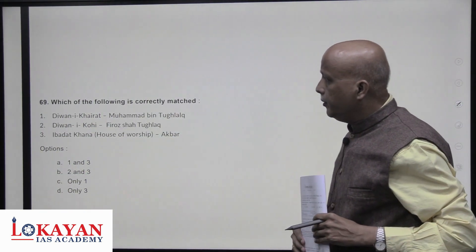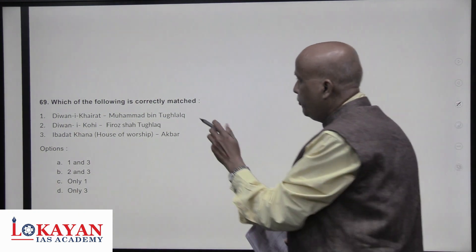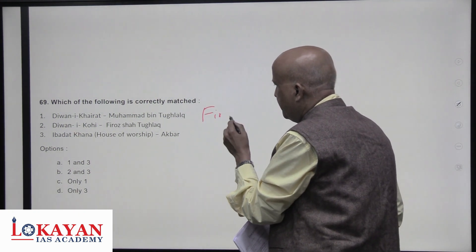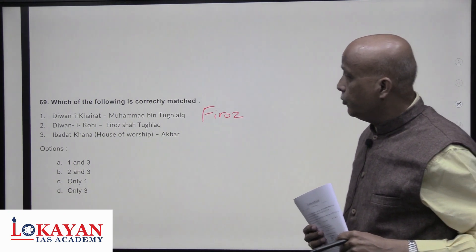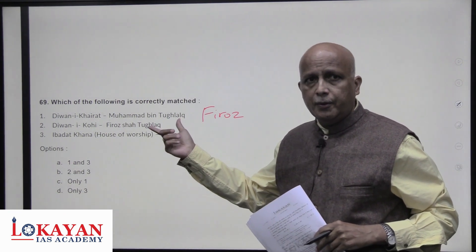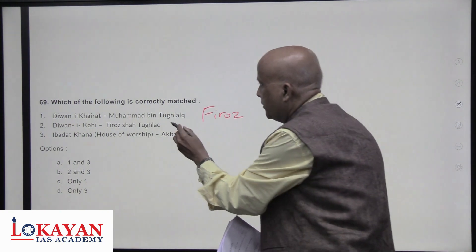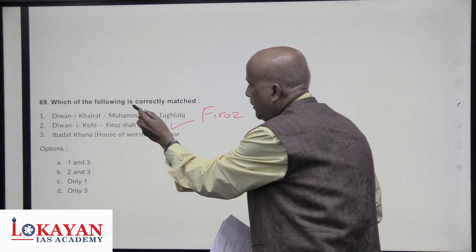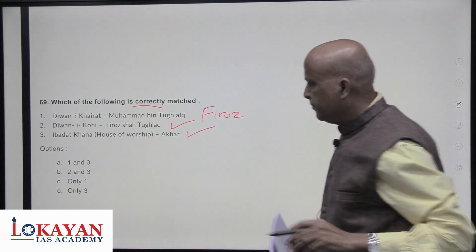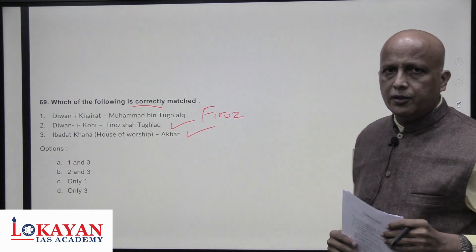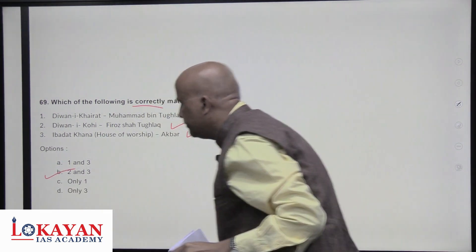Which of the following pairs are correctly matched? Diwan-i-Khairat — Feroz Shah Tughluq: correct. Diwan-i-Kohi (department of agriculture) — Feroz Shah Tughluq: correct. Ibadat Khana (House of Worship) — Akbar: correct, built at Fatehpur Sikri. Statements two and three are correct — answer is B.